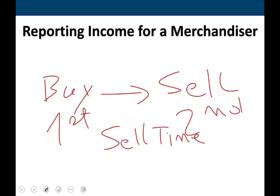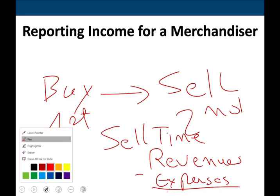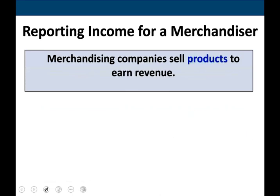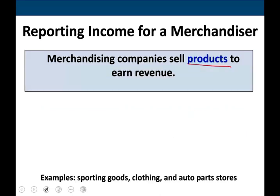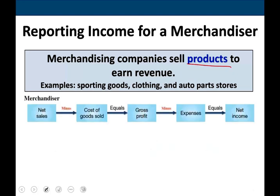You sell your time, so your income statement would look something like revenues minus expenses. For a merchandiser, it's a little bit more complicated in the sense that you're going to have some intermediate steps. A merchandiser sells product to earn revenue. Examples include sporting goods, clothing, auto parts — any store you go to, those are merchandisers.